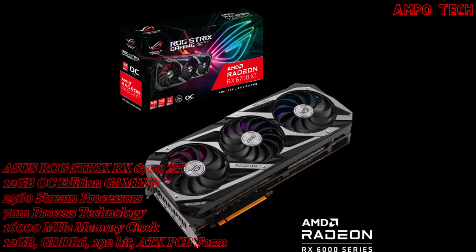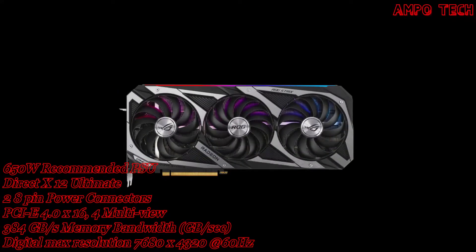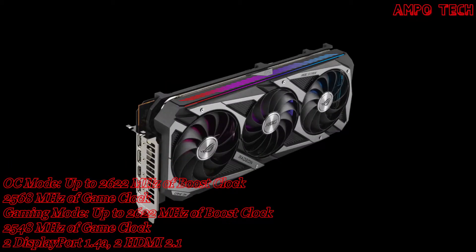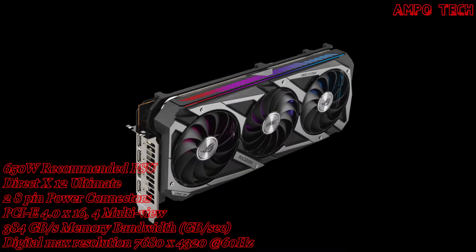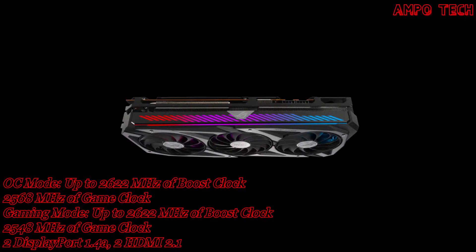The ASUS ROG Strix RX 6700 XT 12GB OC Edition gaming graphics card. This GPU has two engine clock modes: OC mode and Gaming mode. For OC mode, the clock is up to 2622 MHz.